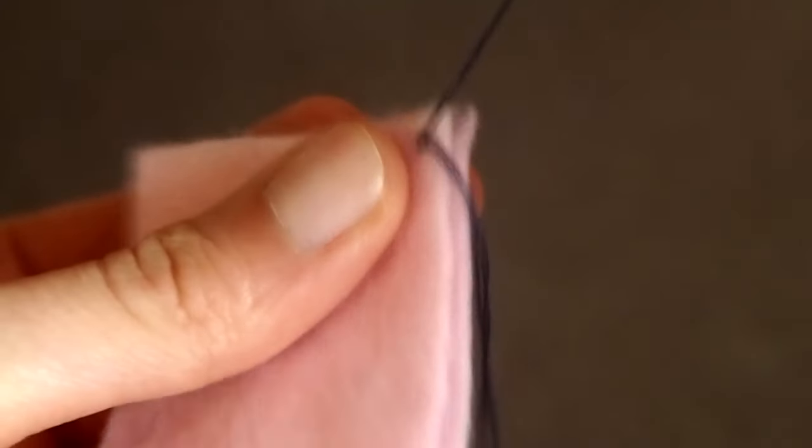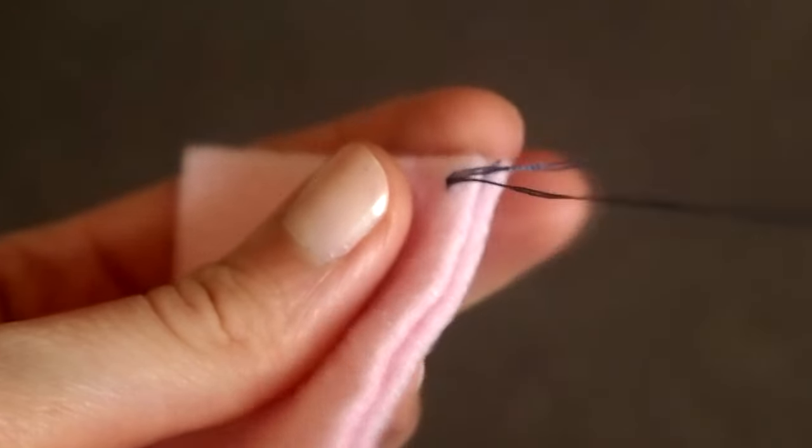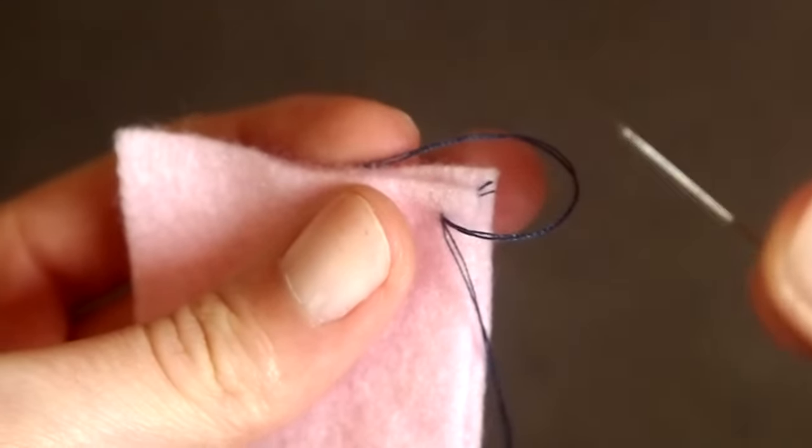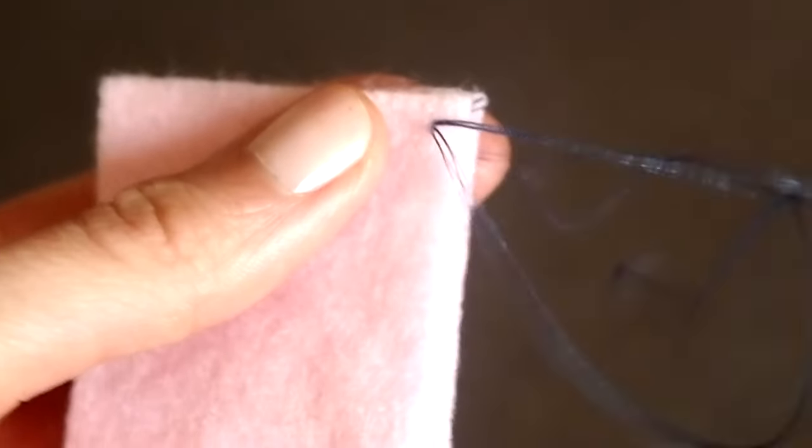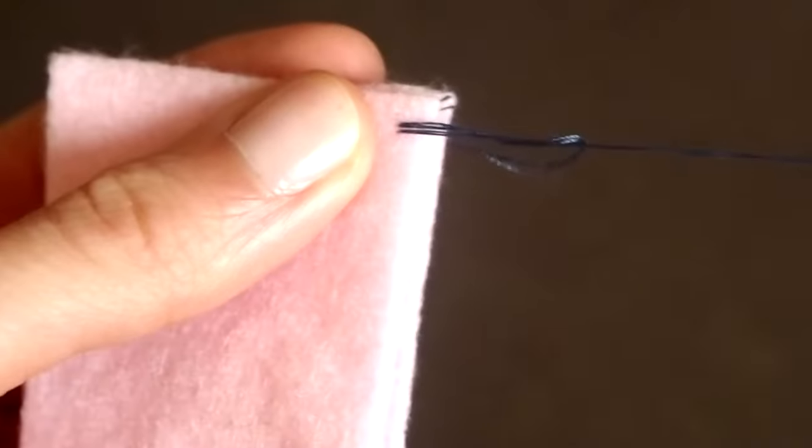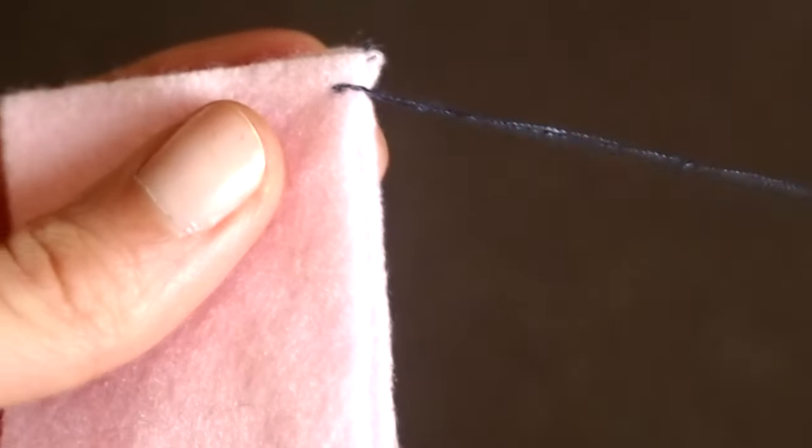And now I'm going to pull it all the way through, but I'm going to make sure I leave a little bit of thread like this, because what I'm going to do then is put my needle back through this loop that we've just created, and pull that tight. And then that's the first stitch of your blanket stitch.